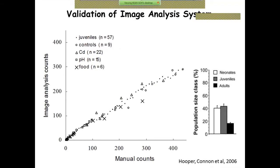There's not a one-to-one correlation on the manual counts, but there's still a very strong correlation and more of a biomass measure. The reason we're not getting one-to-one is because a lot of individuals overlap each other in the tank. Another nice feature is that not only can we count the numbers, we can classify them according to size based on the number of pixels within a group. The graph on the right-hand side shows an example of the number of neonates, juveniles, and adults over a 14-day reproduction test.